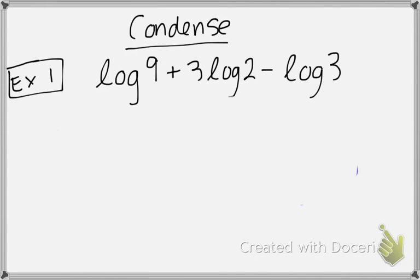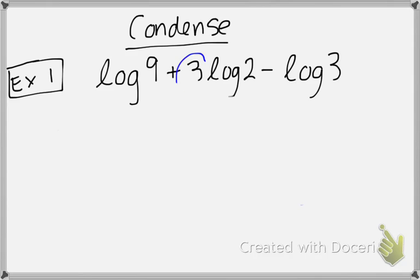Now we're going to try the exact opposite — we are going to condense. When you're condensing, there's something really important to know: if you have a coefficient, you cannot condense the logarithm. You're going to need to use the power property and move it to the exponent before you condense.